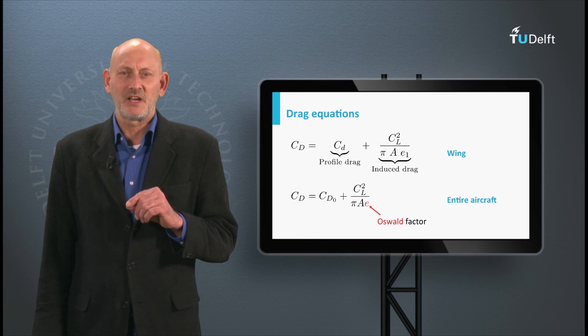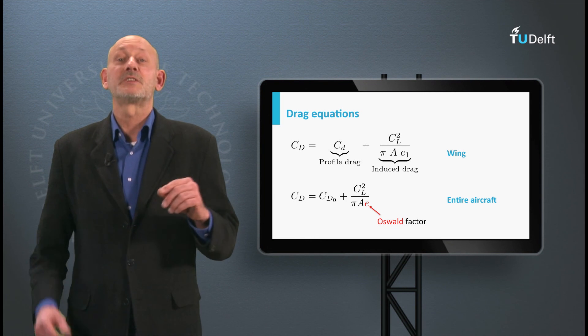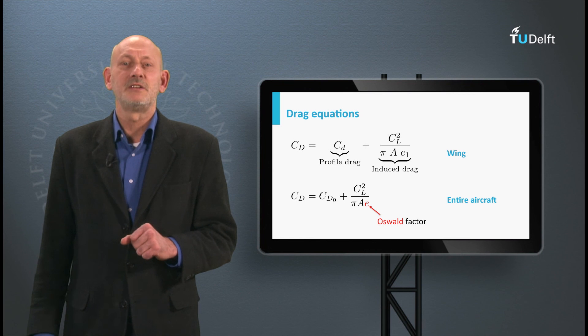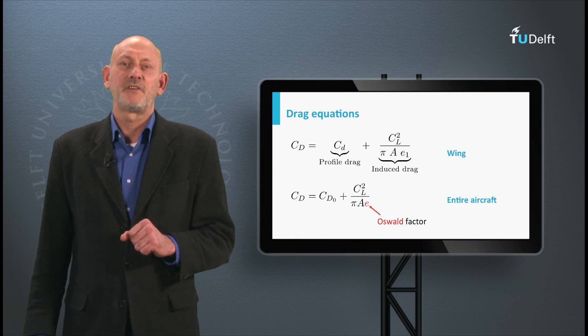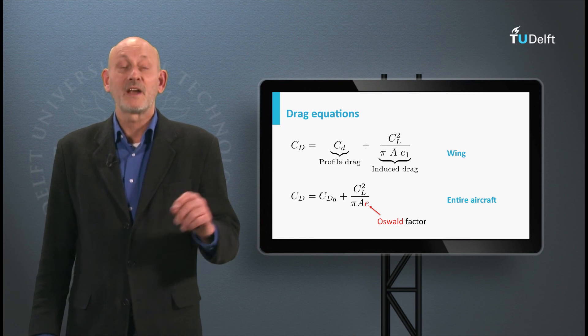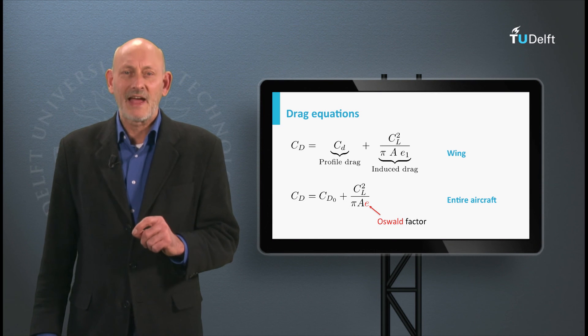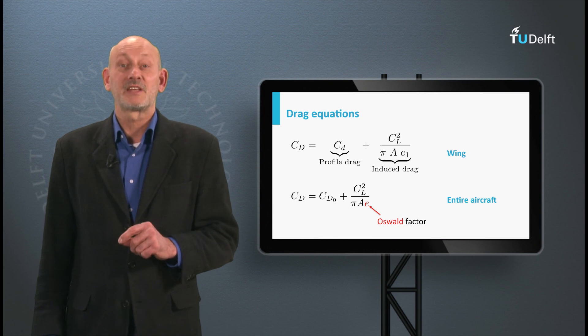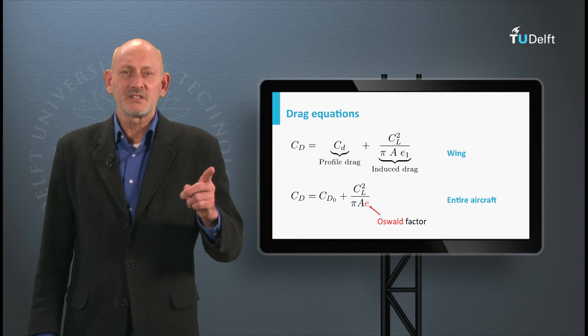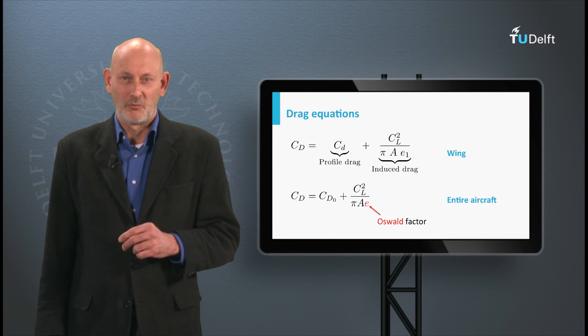Please note that the e in these equations is the span efficiency factor and not the Oswald factor, which appears in the expression of the drag coefficient for the entire aircraft, given by CD is CD0 plus CL squared divided by pi A E, where CD0 is the drag coefficient of the total aircraft at zero lift. More on this you will hear in the lectures on flight performance.